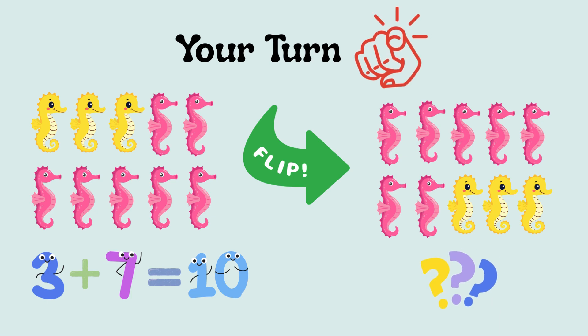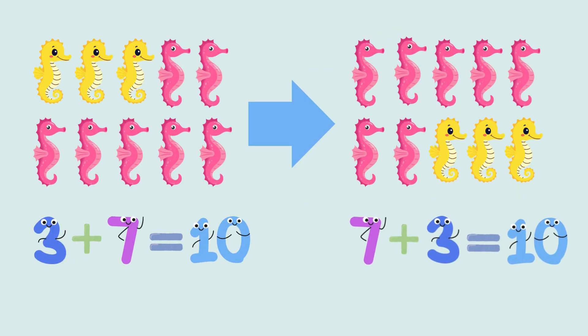Now it's your turn. Can you flip 3 plus 7 equal 10? On the left, there are 3 yellow seahorses plus 7 pink seahorses. What will you get on the right if you flip the numbers? If you said 7 plus 3 equal 10, you are correct.